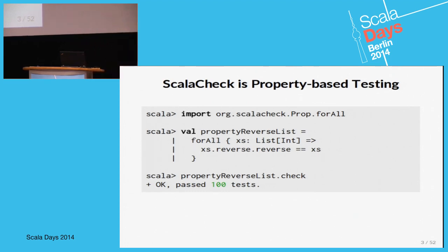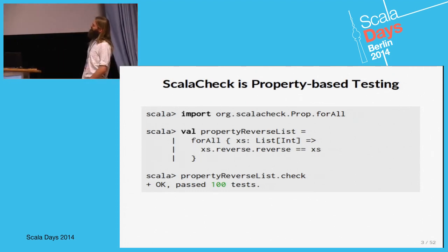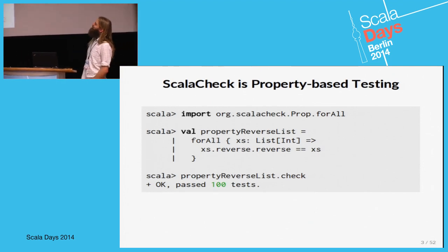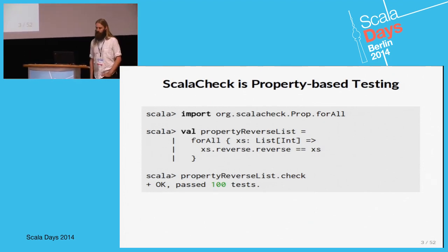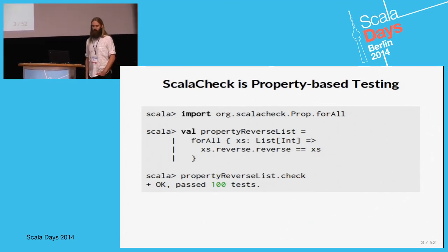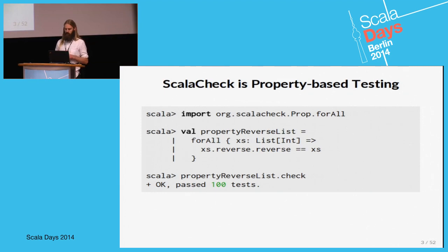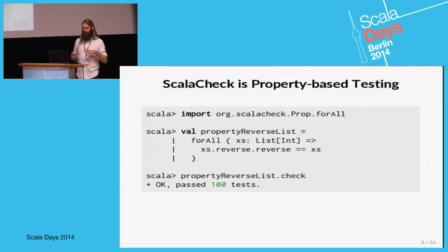This is a sort of canonical ScalaCheck example. ScalaCheck is about property-based testing, so instead of writing examples of how your program behaves for certain inputs, you write an abstract property that should describe the functionality.